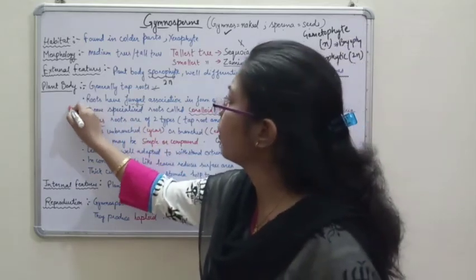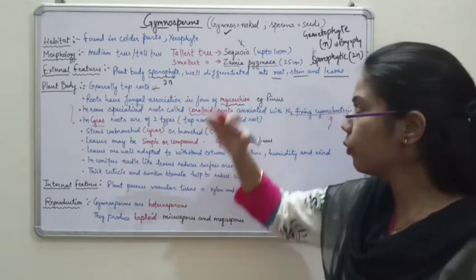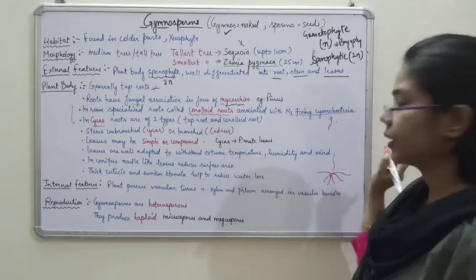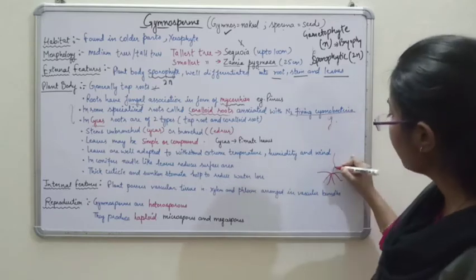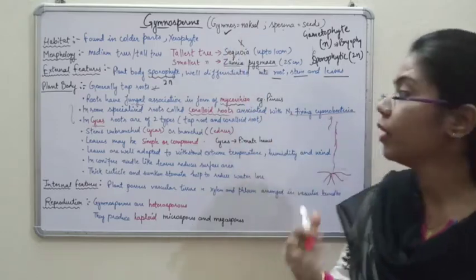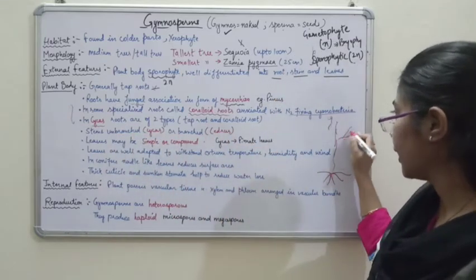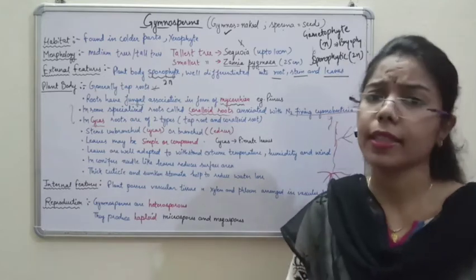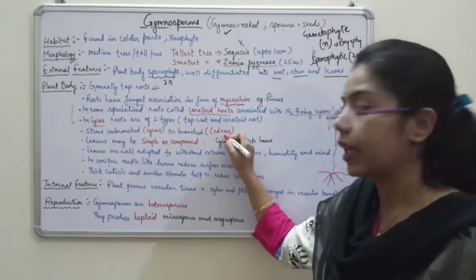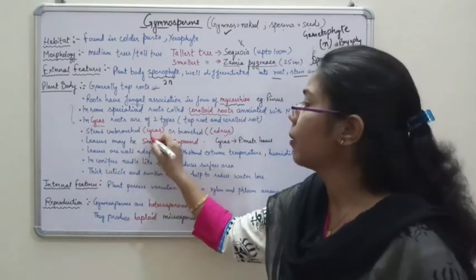We have discussed all about the roots. Now we will move upward to the stems. Stems of the gymnosperm can be branched or unbranched. Branching can happen in any gymnosperm or you may not see branching. Examples are very important: if stems are branched, the example is Cedrus; and if stems are unbranched, the example is also Cycas.